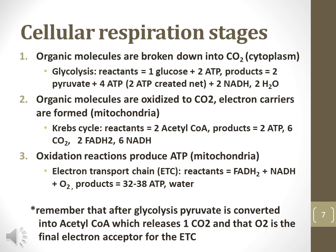The Krebs cycle involves the enzymatic oxidation of acetyl-CoA into carbon dioxide, while converting other molecules into FADH2 and NADH and ATP for energy. The electron transport chain involves a series of redox reactions that oxidize FADH2 and NADH with oxygen to form water and to synthesize 32–38 ATP for energy.